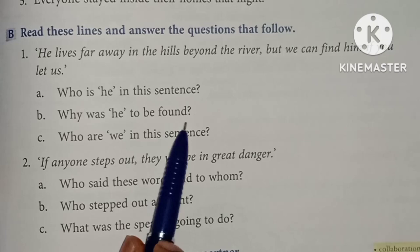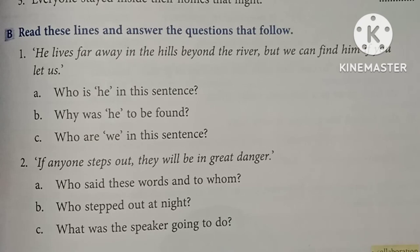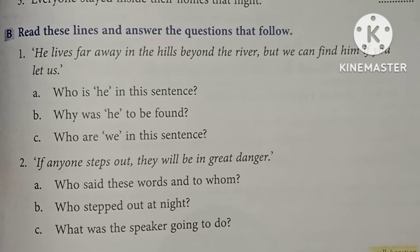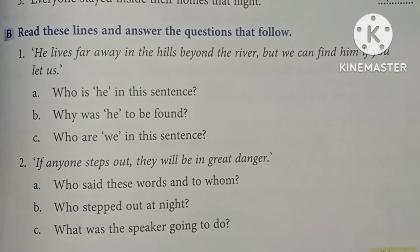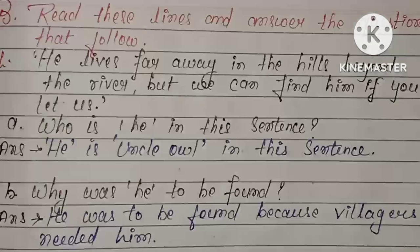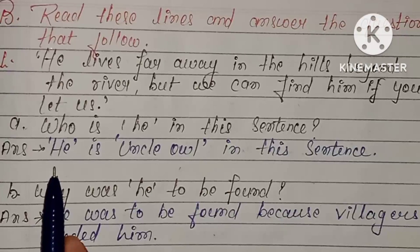Question number b: why was he to be found? He ko kis liye found karna tha? Toh he ko is liye found karna tha kyoki village me bhoat saare rats aagay thay, jiski wajah se woh lhoog bhoat zyadha parisaan thay, toh unki madad ke liye unko find karna tha. Who are 'we' in this sentence? Toh dohnoo admi yaha pe 'we' hai.